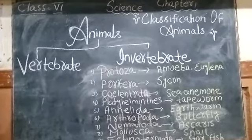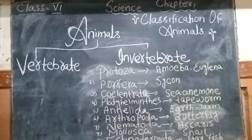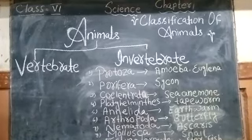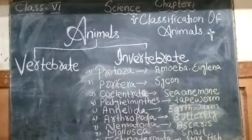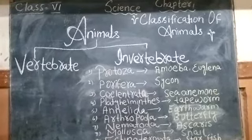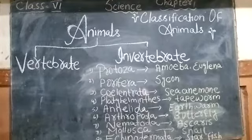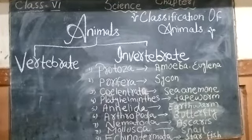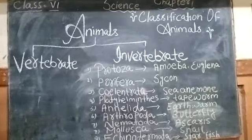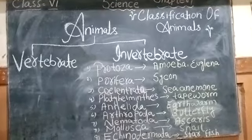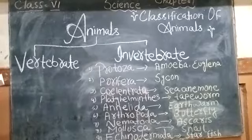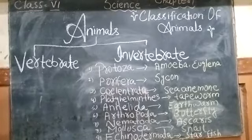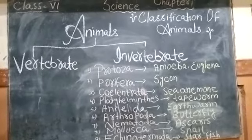My name is Sultanah Sulel from J.B. Magnolia University School. This is Online Class for Class 6, and the name of this chapter is Classification of Animals.